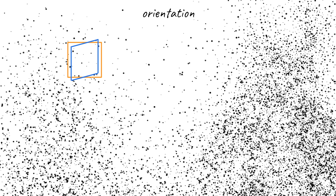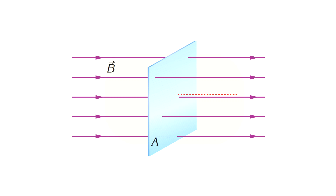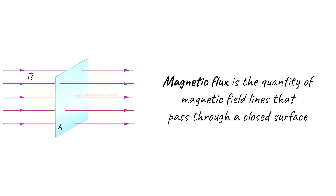We can state that flux is proportional to the orientation of the surface, or the angle between the motion of particles and the plane. With the help of this analogy we can describe magnetic flux — now instead of particles, there are magnetic field lines passing through the surface. So we count the number of lines, or the intensity of the magnetic field lines.